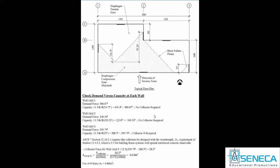ASCE 7 states that when you have a collector, you must design it with an overstrength factor. For this building, the overstrength factor is 2.5. So we multiply the collector force requirement — the difference between demand and capacity — by 2.5, getting a 28.2 kip demand for the collector force. That results, using 60 ksi steel and a 0.75 capacity reduction factor, in a requirement of 0.63 square inches of steel for that collector. We'll use four number 4 bars extending north of this wall.